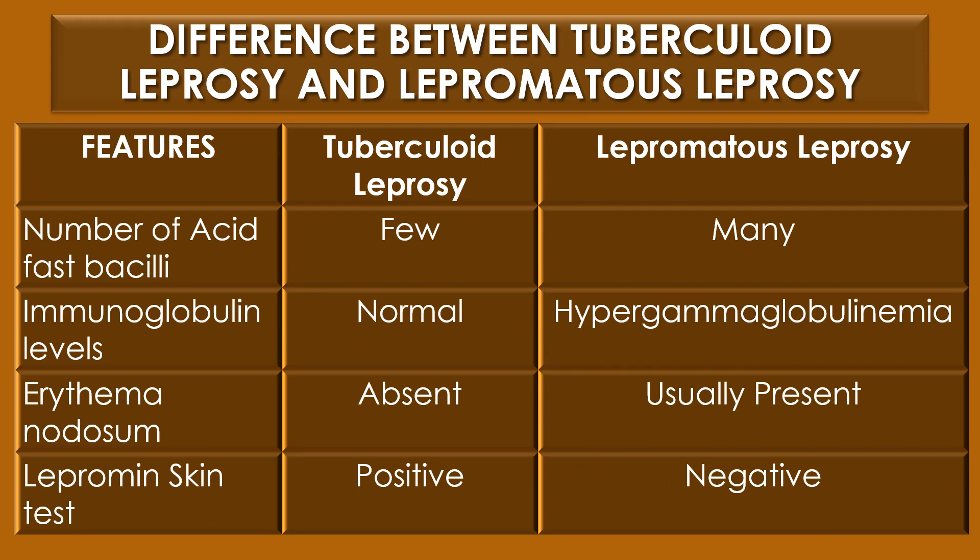The number of acid-fast bacilli is very few in tuberculoid leprosy but many in lepromatous leprosy. Regarding immunoglobulin levels, the level is normal in tuberculoid leprosy but lepromatous leprosy results in hypergammaglobulinemia. Erythema and edema are absent in tuberculoid leprosy but usually present in lepromatous leprosy. Finally, the lepromin skin test shows a positive reaction for tuberculoid leprosy and a negative reaction for lepromatous leprosy.